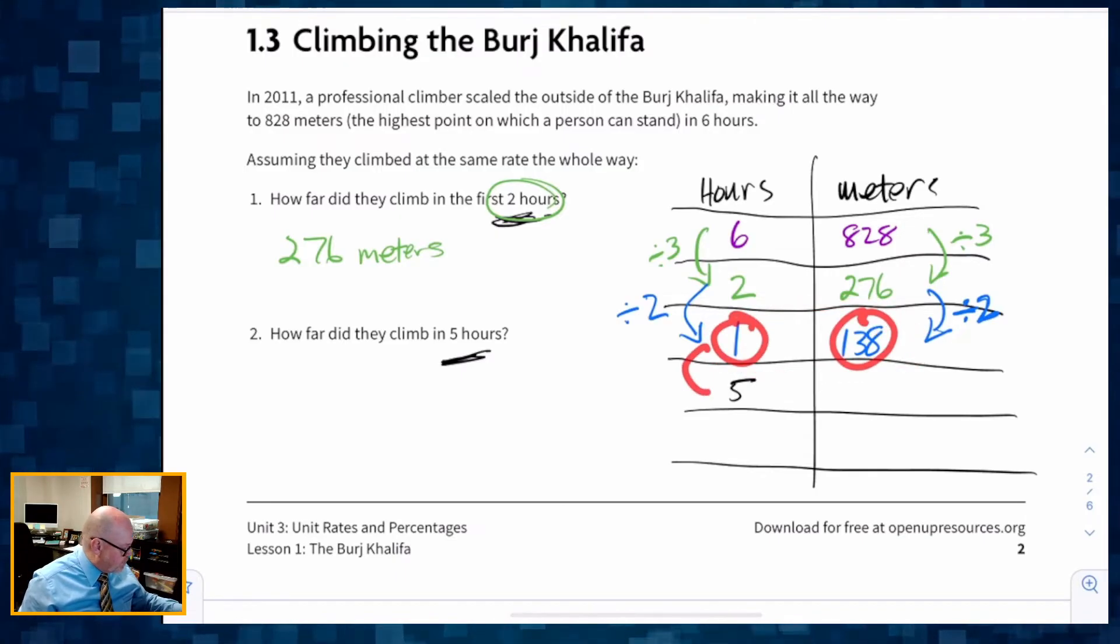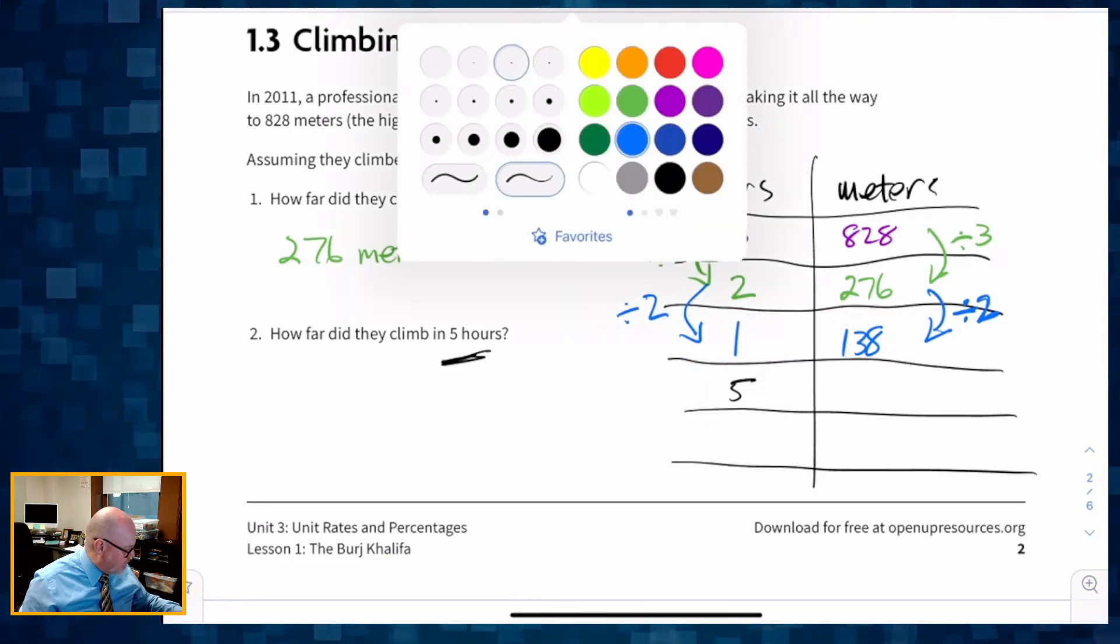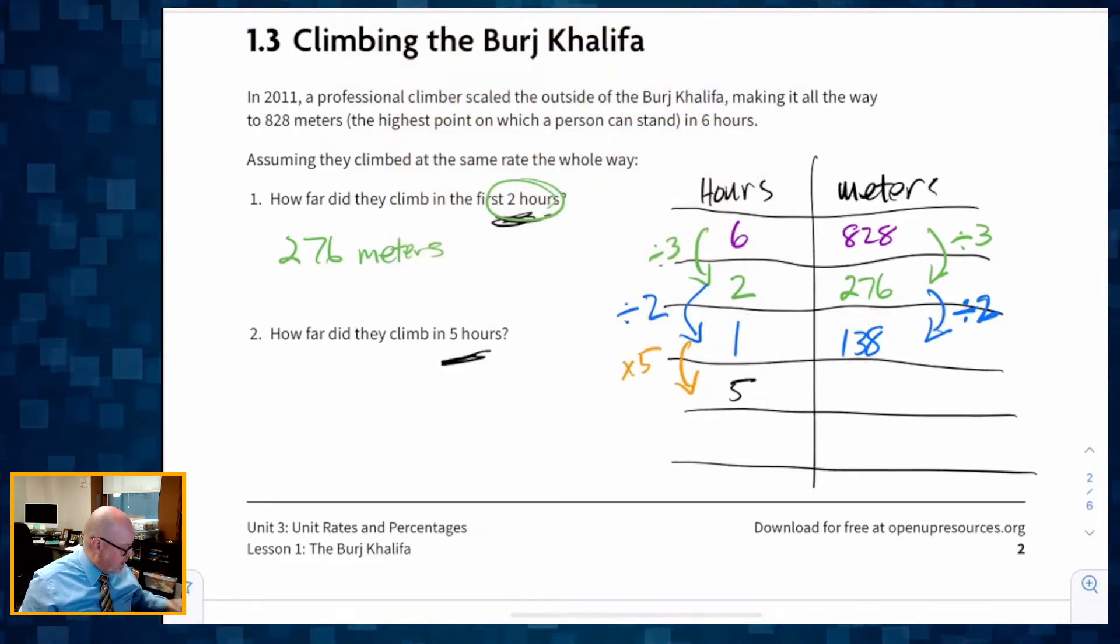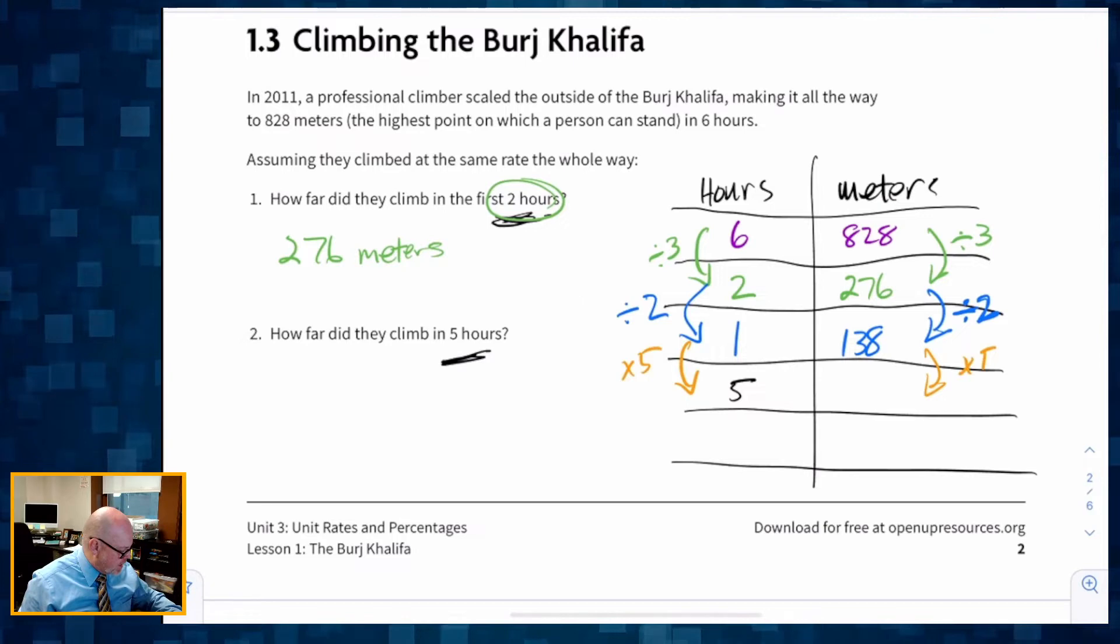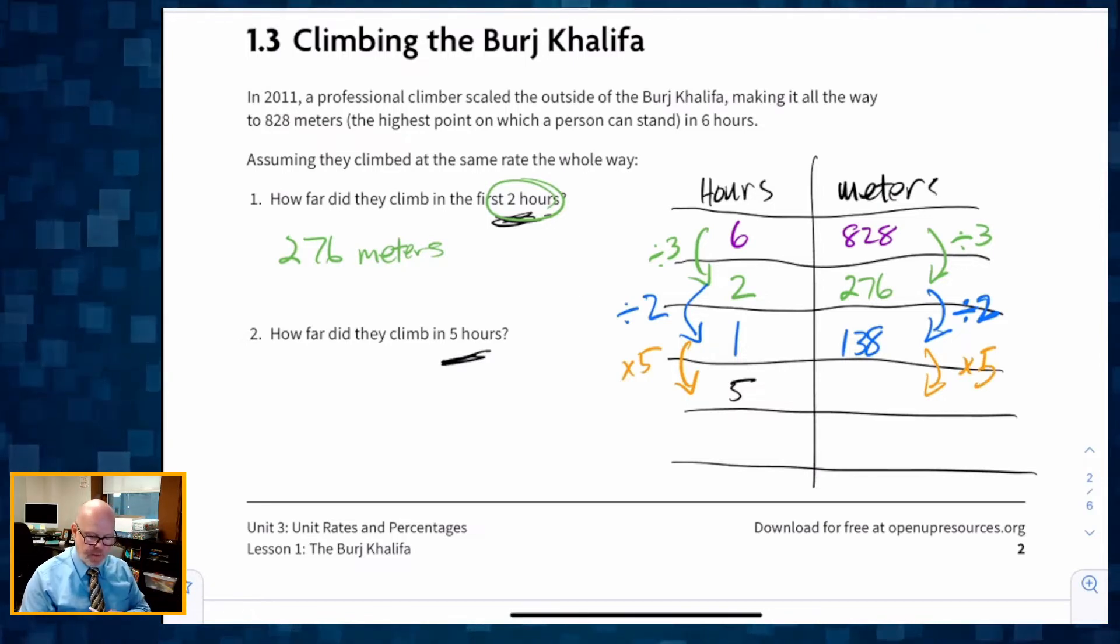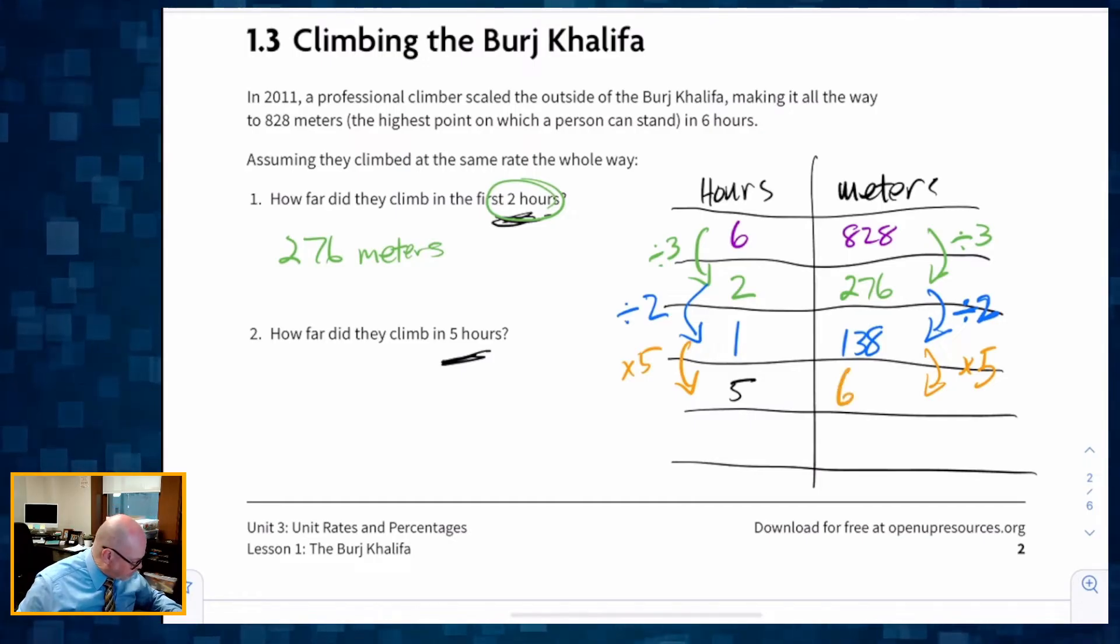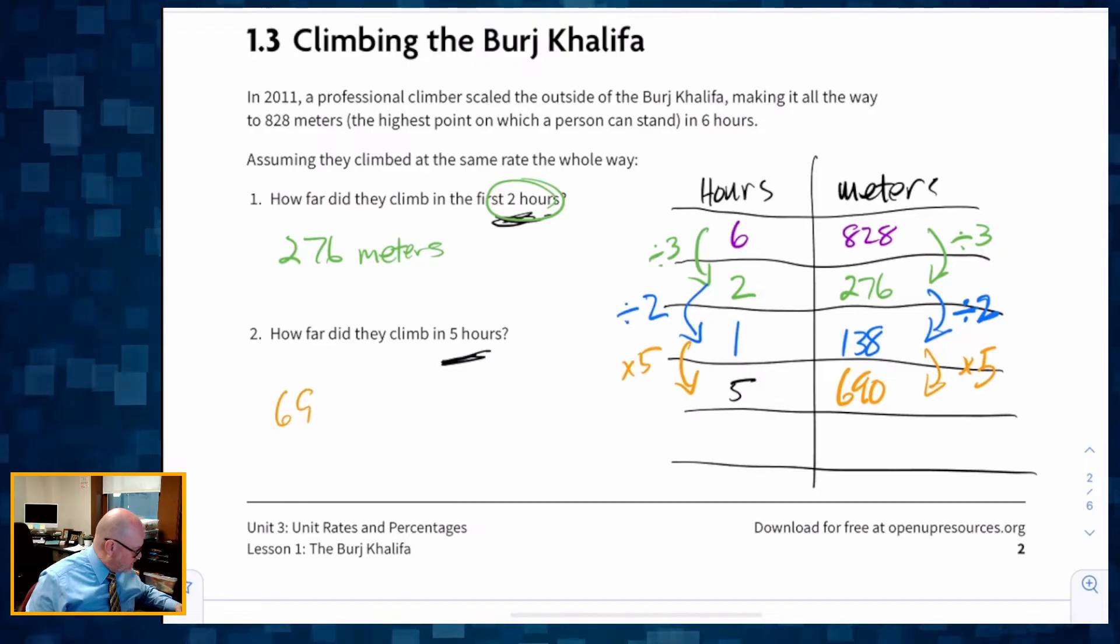And now that I know how many meters the person could climb in one hour, now all I have to do is scale it up by five. So one times five gives me five hours, which means 138 times five is 690. So how far did they climb in five hours? 690 meters.